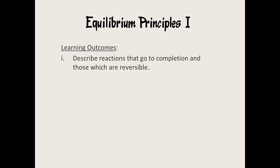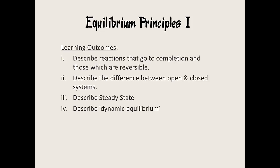In this introductory video, I will cover these learning outcomes. I will describe reactions that go to completion and those which are reversible. I will describe the difference between an open and closed chemical system. I will describe what a steady state system is. And finally, I will define the concept of dynamic equilibrium as a type of chemical reaction and look at three scenarios of equilibrium reactions and their reaction rate curves.